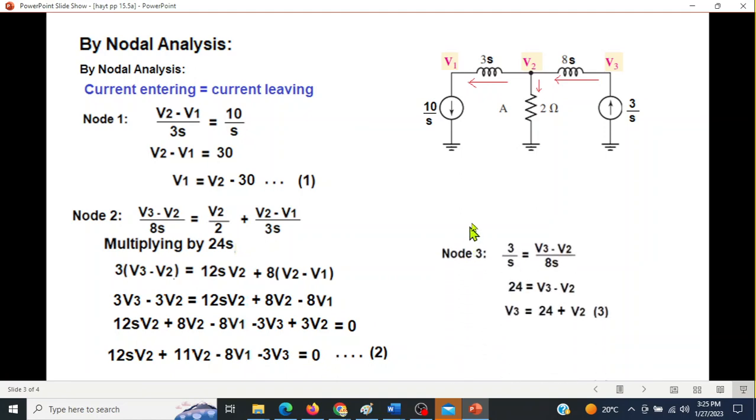Now let's go to node number 3. Current entering is current leaving. So 3 over S is equal to V3 minus V2 over 8S. And from here also, SS cancels, cross multiply. 24 is equal to V3 minus V2, or V3 is 24 plus V2. This is equation 3.